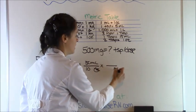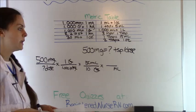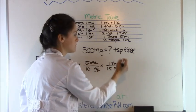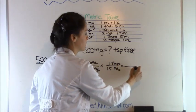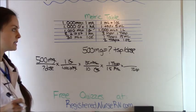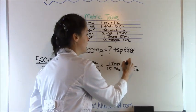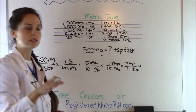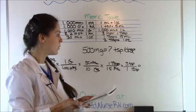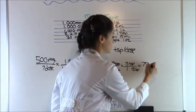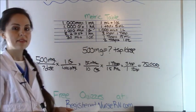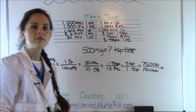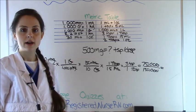We need to get to teaspoons, so we ask how many milliliters are in a tablespoon. We know 15 milliliters equals one tablespoon — so 15 milliliters on the bottom and one tablespoon on top. Milliliters cancels out, but we still need to get to teaspoons, so tablespoons moves down. There is one tablespoon in three teaspoons — so one tablespoon on the bottom and three teaspoons on top. Now we're in teaspoons and the problem asks for teaspoons per dose, so we're done. Multiply top: 500 times 1 times 50 times 1 times 3 equals 75,000. Multiply bottom: 1,000 times 10 times 15 times 1 equals 150,000. Then 75,000 divided by 150,000 equals 0.5 teaspoons per dose.